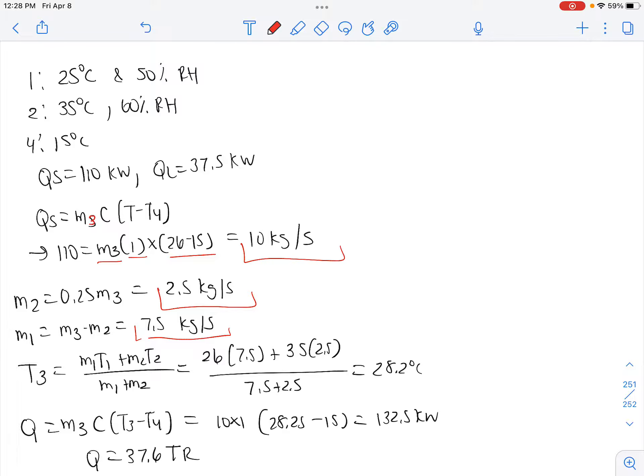Our T3 is M1 T1 plus M2 T2 divided by M1 plus M2, which we find to be 28.2 degrees Celsius.